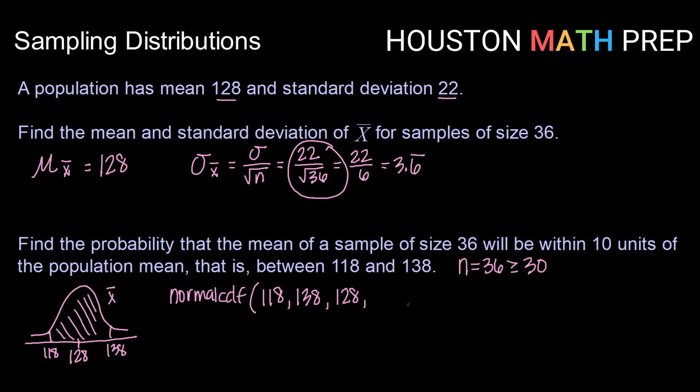Now it's really important when you're working with this that you don't use your rounded standard error. If your standard error does not come out to be a nice whole number, then you need to type in the unrounded version. So I'm going to type in here 22 divided by the square root of 36. Because the square root of 36 is 6, I also could have typed in 22 divided by 6. Working that calculation, I get 0.9936. So the probability that the mean of the samples will be between 118 and 138 is 0.9936, or 99.36%.